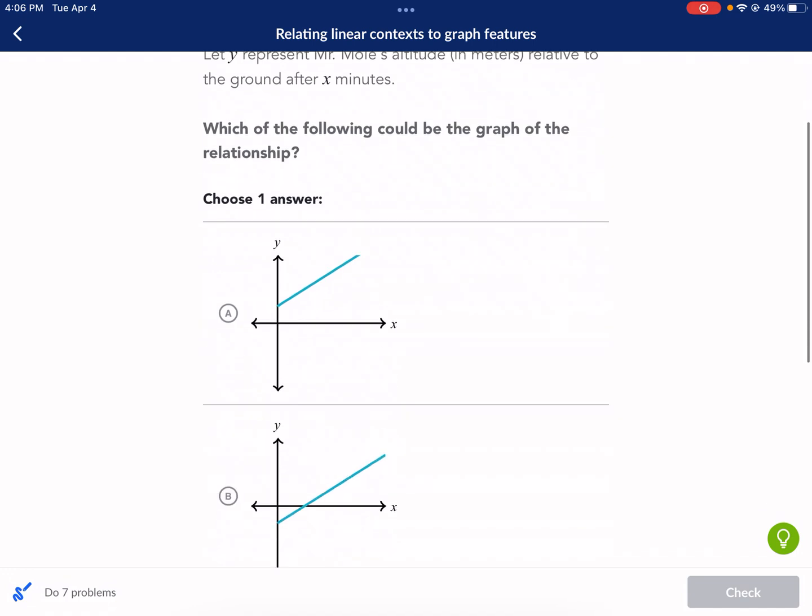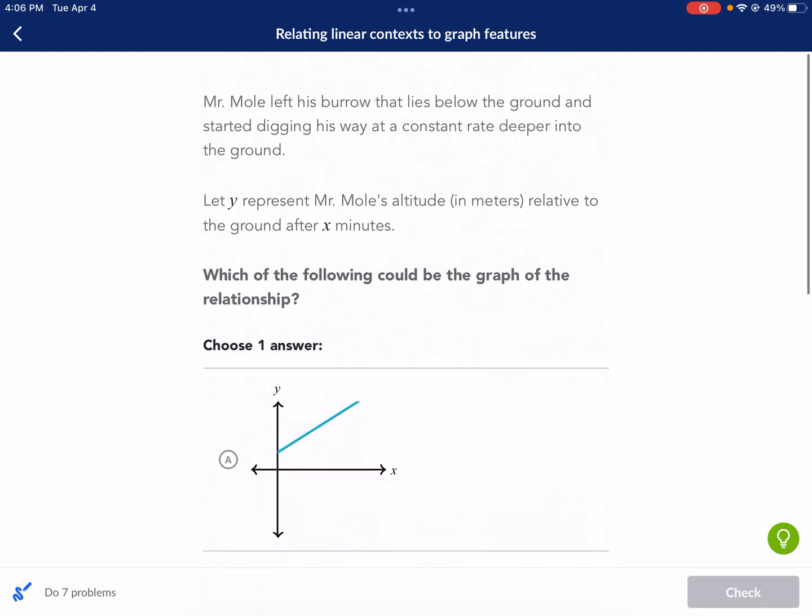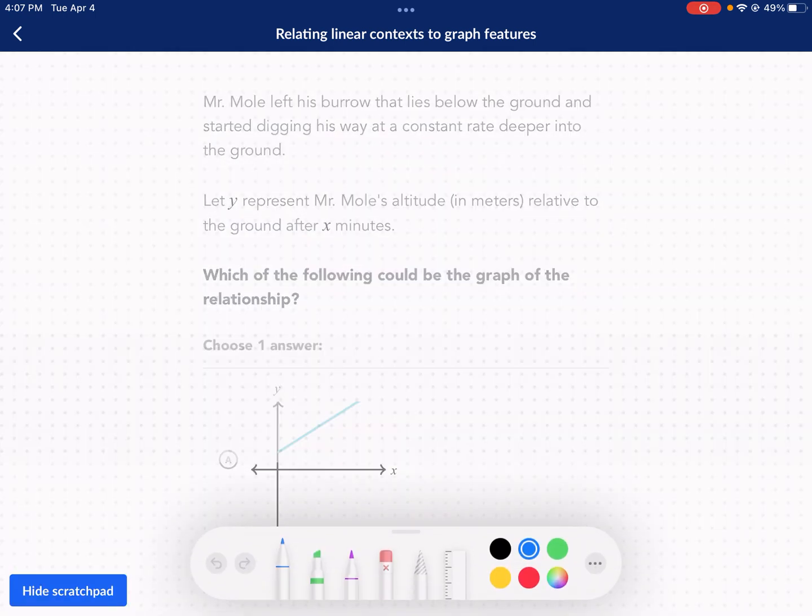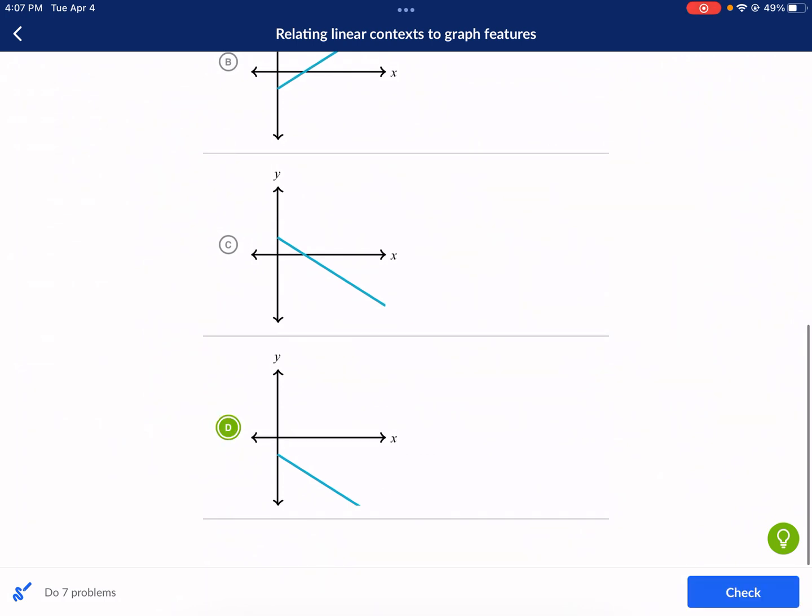It says it goes at a constant rate. All of these are straight lines, so that doesn't really narrow it down. It does say that he's starting digging his way deeper into the ground and that it starts below the ground. So those are two things. Let's see if I can highlight that for you. Right here.